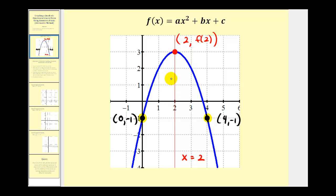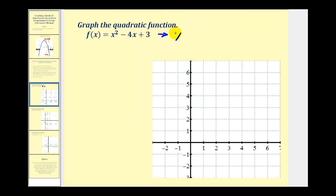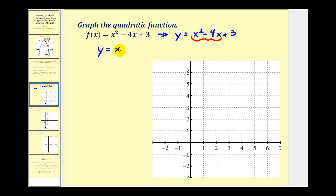Before we define the formal steps for this method, let's take a look at an example. We can write this as y = x² - 4x + 3. For this method, we're going to factor out the greatest common factor between the two x terms, which in this case is x. So we'll write this as y = x(x - 4) + 3.